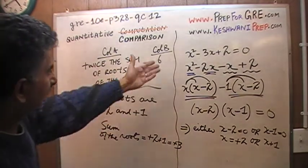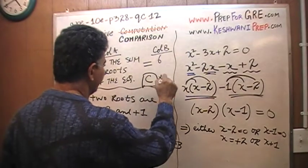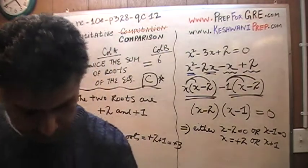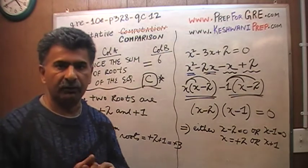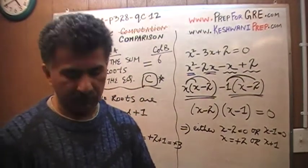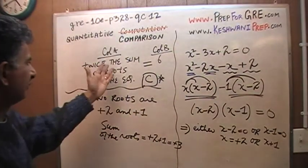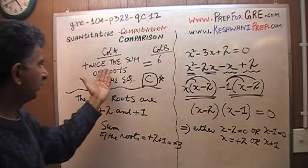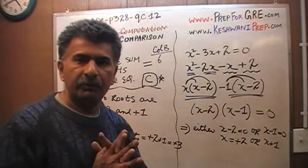Hence the quantity in column A equals 6, so the answer is C. About 56% of people who took this exam got this question wrong — only 44% got it right. First find the roots, add them up to get 3, then take twice that, which is 6 — the same as the quantity in the other column. I hope you found it helpful.